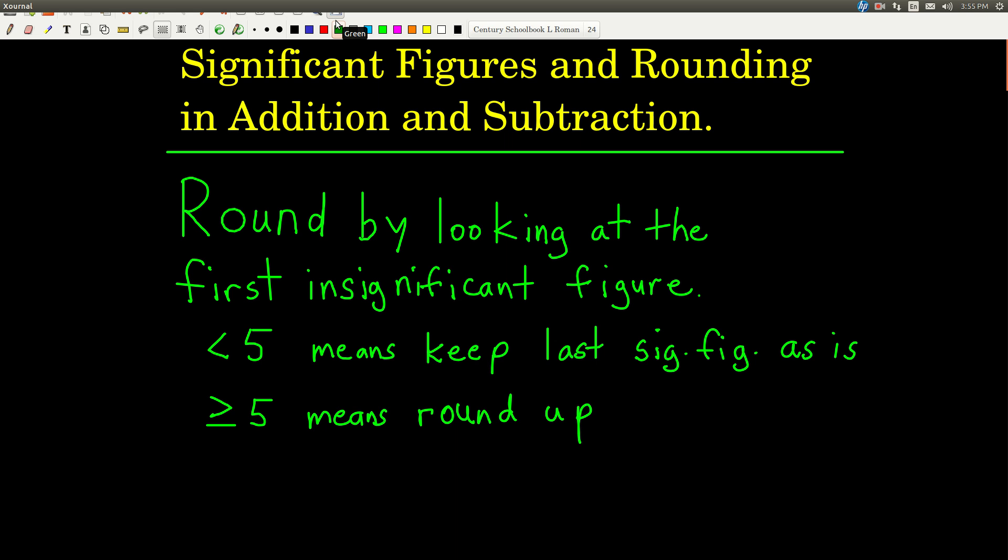Well, most of the time in chemistry and science, when we take a measurement, we just don't leave that number as it is, but we're going to manipulate it. We're going to do calculations with it to try to get some more information from it. And we want to keep the information about how good our measurement was as we carry out those calculations. So the tool that we're going to use is what we're talking about here in this one and the next video.